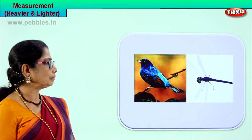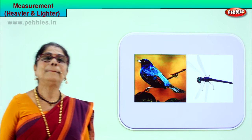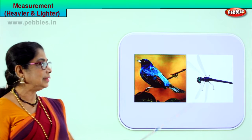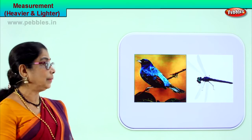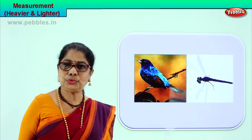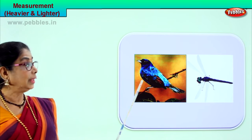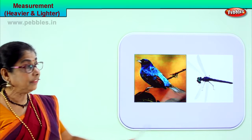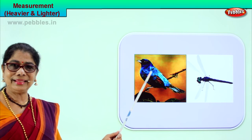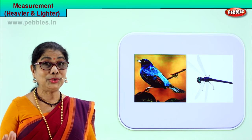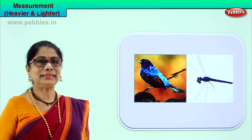Let's take another picture. You have a dragonfly — you see the tiny dragonfly moving about in the garden during the rainy season — and here you have a bird. If you weigh them, the dragonfly is lighter than the bird. This tiny bird is heavier than the dragonfly. Now you've learnt the two measurements.